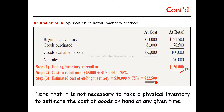That is the retail method, and that is what we call the gross profit percentage method. From this application of the retail method and gross profit method, you can estimate a company's inventory cost. Note that it is not necessary to take a physical inventory to estimate the cost of goods on hand at any given time.